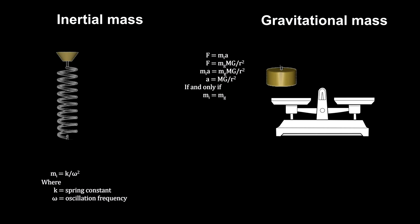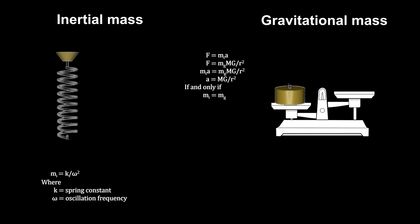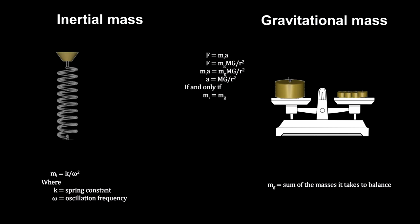To measure an object's gravitational mass, we use a balance. Since gravitational fields apply the same gravitational force to equal masses, known masses can be added to the scale until the balance is balanced.